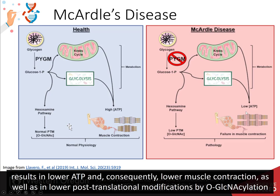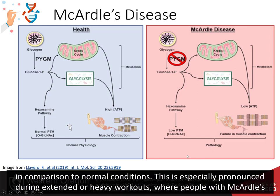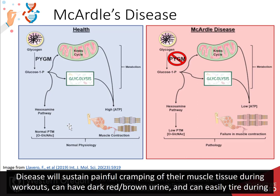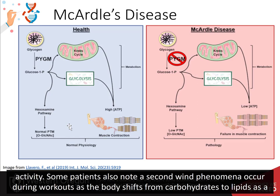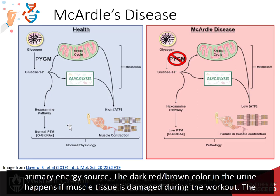This results in lower ATP and, consequently, lower muscle contraction, as well as lower post-translational modifications such as amination and acylation, as compared with normal conditions. This is especially pronounced during extended or heavy workouts, where people with McArdle's disease will sustain painful cramping of their muscle tissue. They can have dark red or brown urine and can easily tire during activity. Some patients also notice a second wind phenomenon during workouts, as the body shifts from carbohydrates to lipids as a primary energy source.